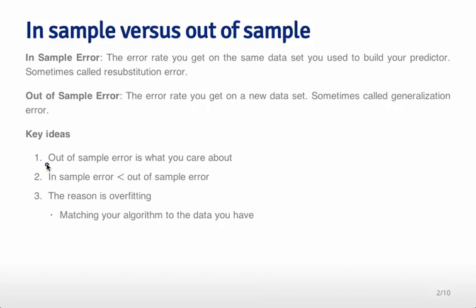Almost always, out-of-sample error is what you care about. If you see a reported error rate for data, the error rate reported only on the data where the machine learning algorithm was built, you know that's very optimistic and it probably won't reflect how the model will perform in real practice.